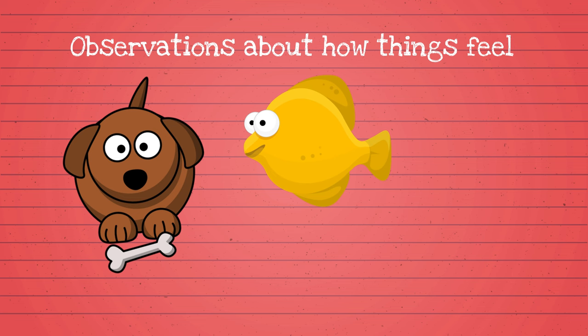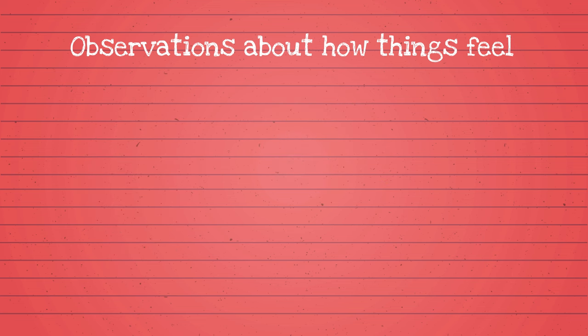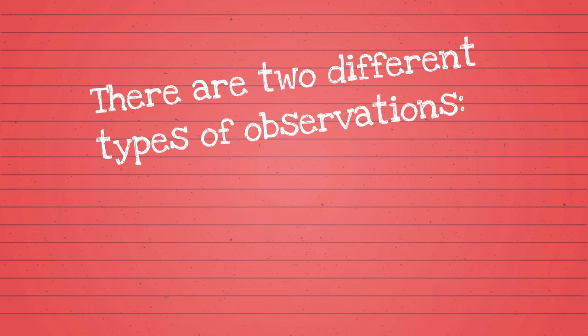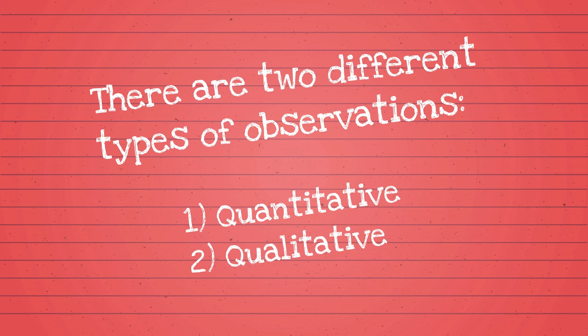Again, our senses allow us to gather information about our surroundings. There are two different types of observations that you have to know. Quantitative observations and qualitative observations.